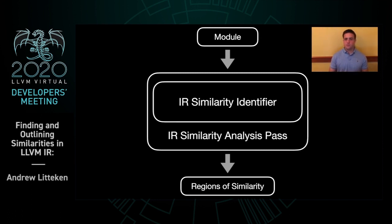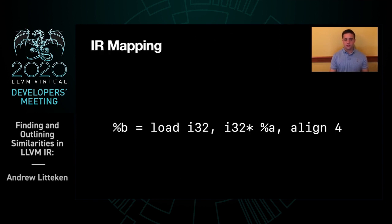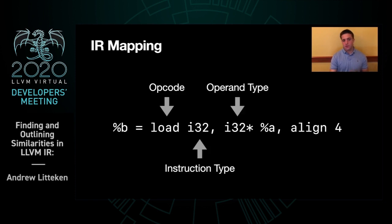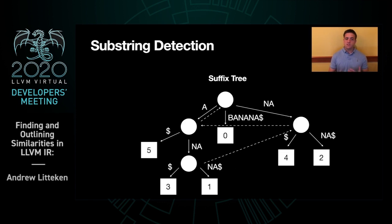So how do we find similarity? Well, it starts with the instructions. Rather than looking at the values of the operands, we look at the instruction opcode, instruction type, operand types, and extra parameters to create an unsigned integer representing that instruction. This lets us represent the entire program as a string of unsigned integers that can be passed to the suffix tree, which is the data structure that can find repeated substrings in O(N) time, making it a great tool for finding similar sections of the program.